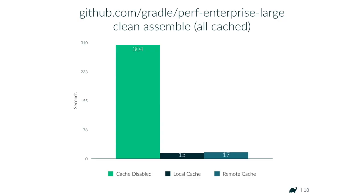I can only show performance numbers from a large enterprise Java project publicly available on GitHub. With the cache disabled, it takes 304 seconds to build. With the local cache enabled, it gets down to 15 seconds. With the remote cache, it's 17 seconds. The effect of this cache is stronger the more computationally expensive it is to produce the output — you won't get benefits from caching a copy task, but caching dexing tasks and sharing them via remote cache will probably have a strong impact.